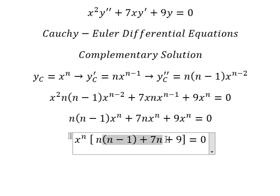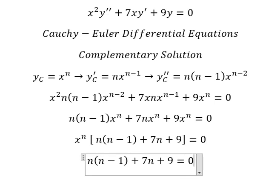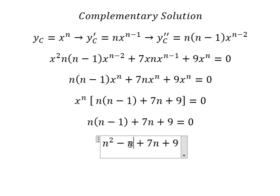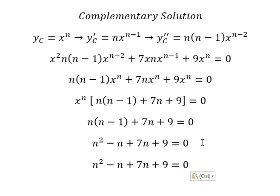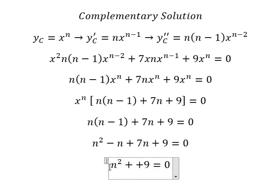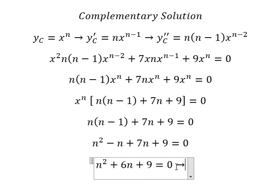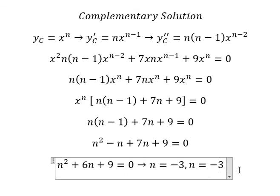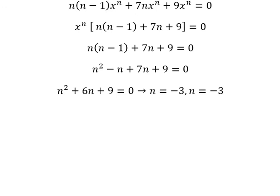Now we solve the characteristic equation inside the brackets. We get n squared minus n, and simplifying 7n minus n gives 6n. In this situation we find two solutions, but they have the same value: n equals negative 3 (repeated root).